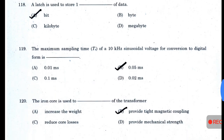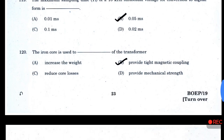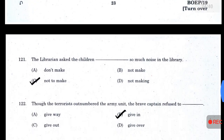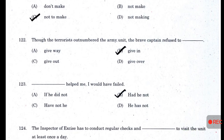The maximum sampling time T₂ of a 10 kHz sinusoidal voltage for conversion to digital is 0.05 ms. The iron core is used to provide tight magnetic coupling in a transformer. 'The librarian asked the children not to make so much noise in the library.' Though the terrorists outnumbered the army unit, the brave captain refused to give in.